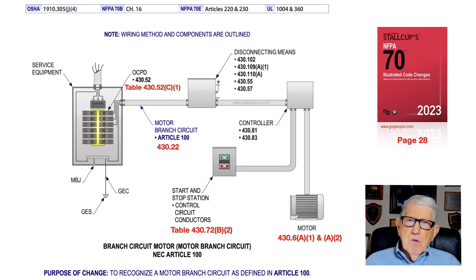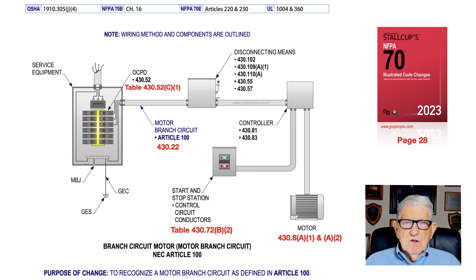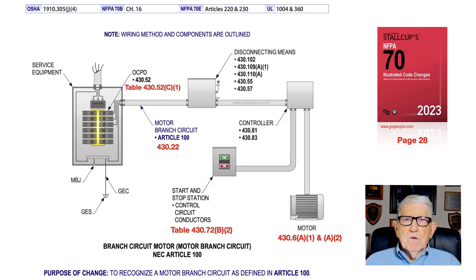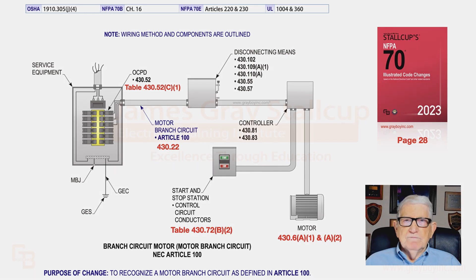You have the disconnecting means with its appropriate sections for the controller and the motor. At the controller, you have your different sections where you could look up more information. You have the stop and start stations or the controlling means in accordance with Table 430.52 B2 and C. Then, of course, the motor itself — nameplate ratings, table current values — listed in 430.6 A1 and A2. For the starting method used for the motor, see 430.7B. This definition will be a very helpful, usable term in Article 430.